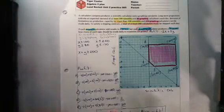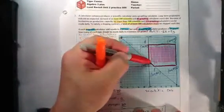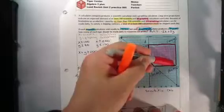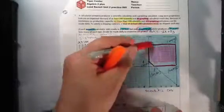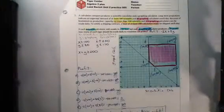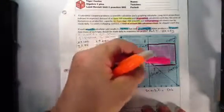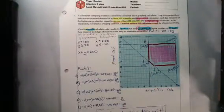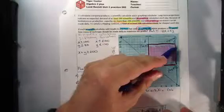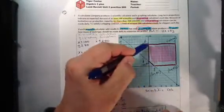Then we actually highlighted what we call the feasible region - above, to the right, to the left, and below. Once we get that shaded all in, our feasible region, we can actually label all the maximums and minimums, the corner points.